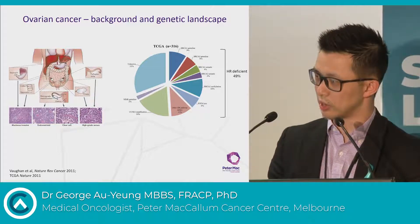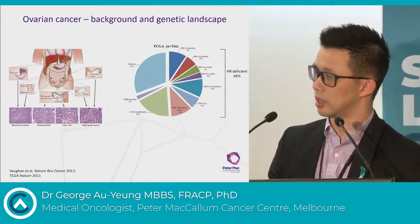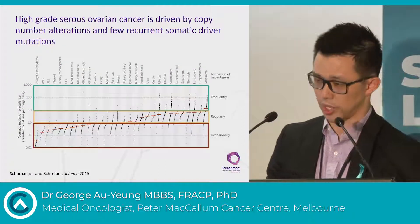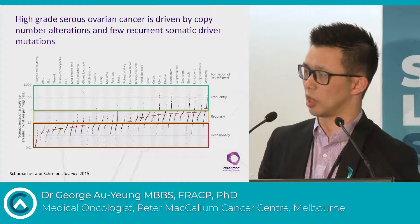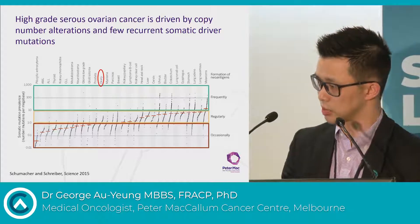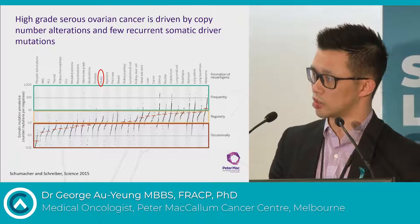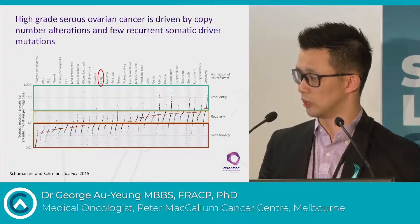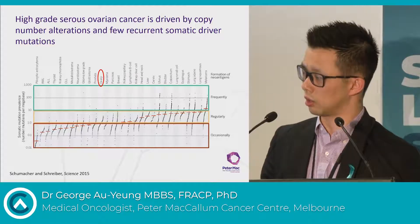High-grade serous ovarian cancer is the most common type of epithelial ovarian cancer and is characterized by very common deficiencies in homologous recombination and P53 mutations. Rather than being driven by somatic mutations, it's really a disease of very high copy number alterations. Ovarian cancers sit somewhere to the left to the middle in this chart, which describes the mutational burden in various cancers in relevance to the frequency of formation of neoantigens, thought to be an important potential correlate for immune response.